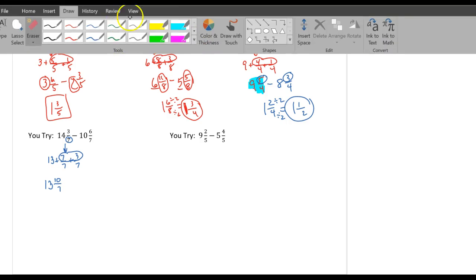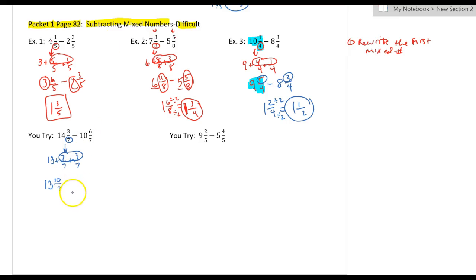Minus, so we have 13 and ten-sevenths minus ten and six-sevenths. So now notice, my numerator, this numerator is bigger than that, so now I can subtract. Thirteen minus ten is three. Ten minus six is four out of seven.